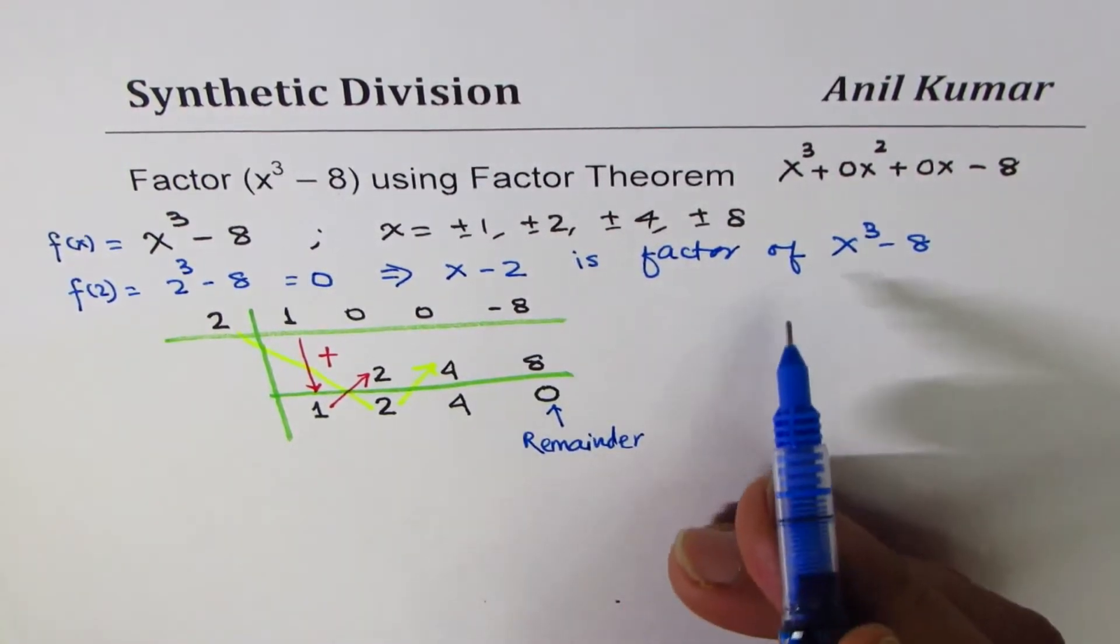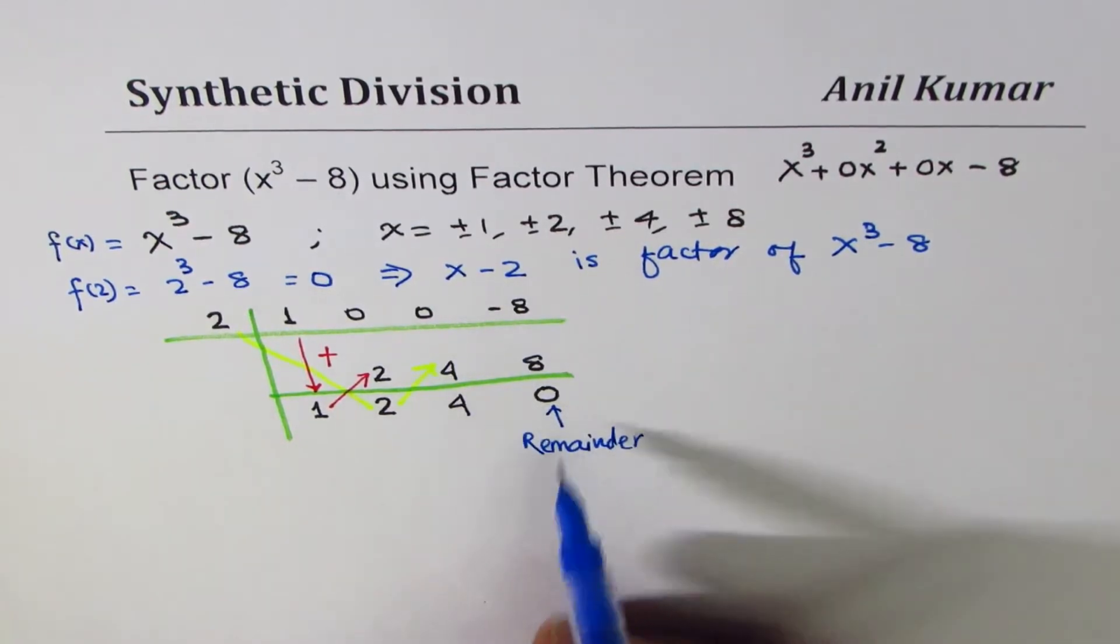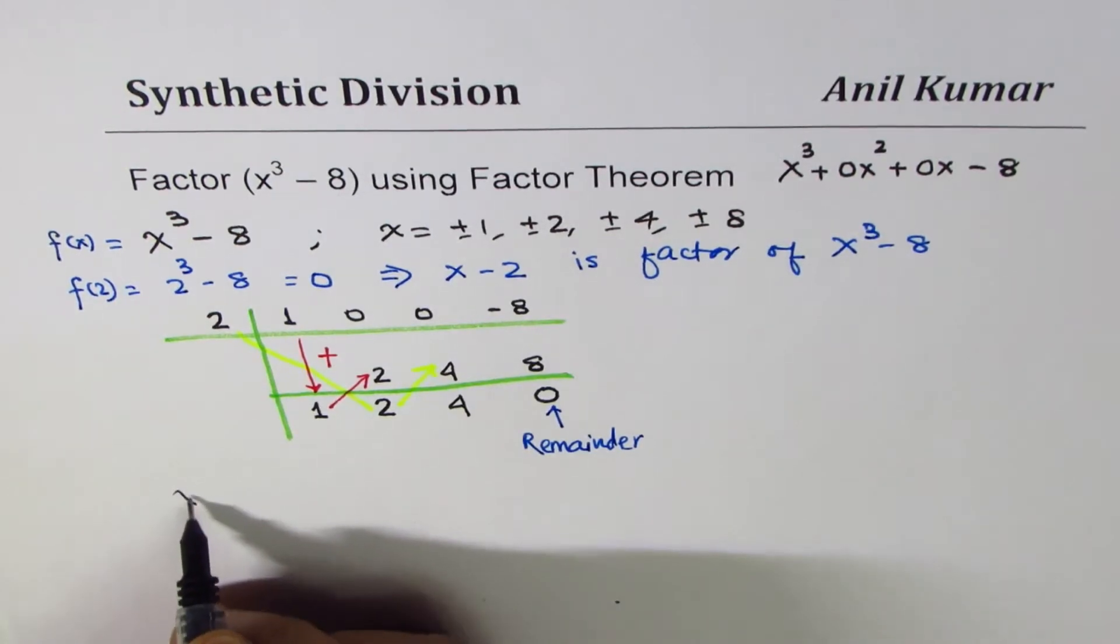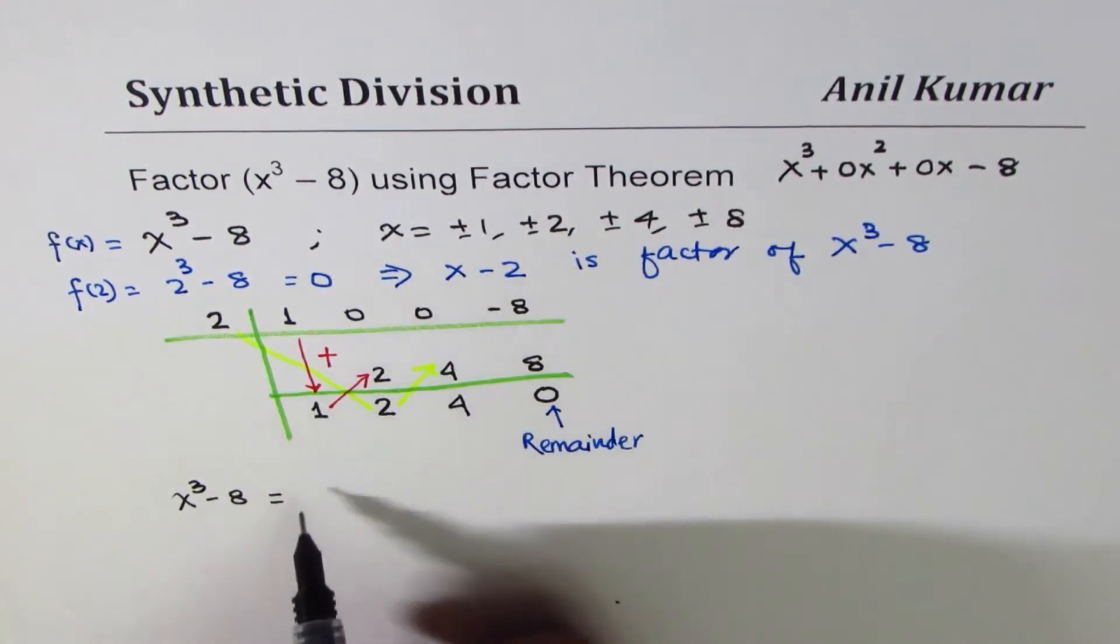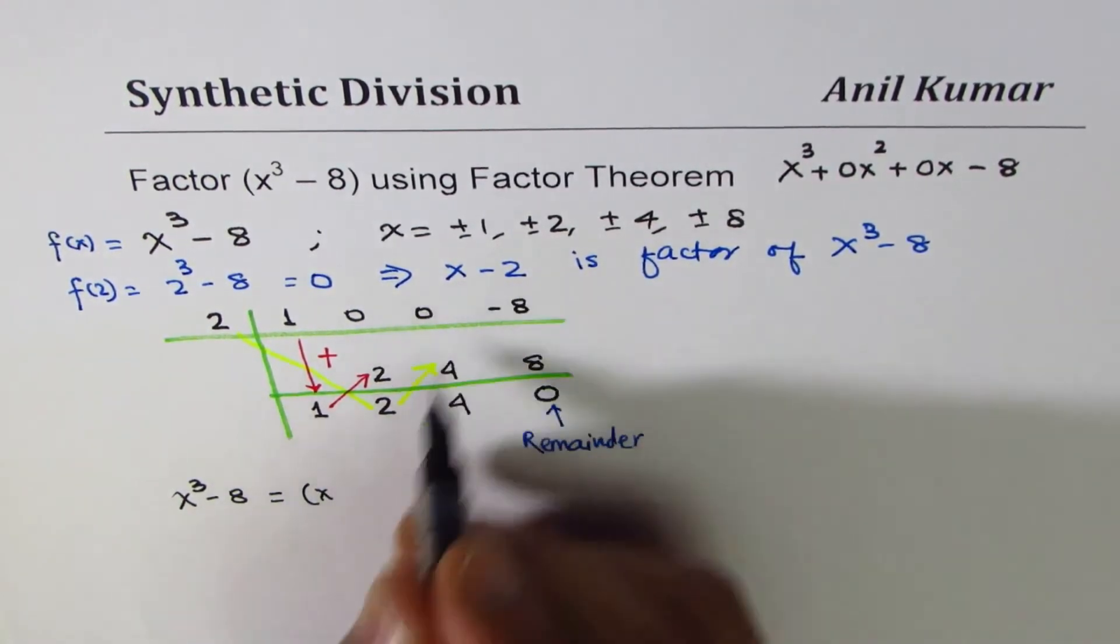Since x minus 2 is a factor, we expect the remainder to be 0. Perfect. And now we could write x cubed minus 8 as equal to, one of its factors is x minus 2.